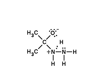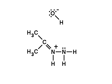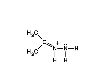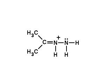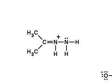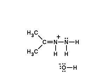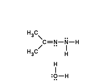An ammonium proton is transferred to the negatively charged oxygen atom, and upon heating, the tetrahedral structure collapses. Hydroxide ion leaves, and a carbon-nitrogen double bond forms. Hydroxide ion then removes the remaining proton on the positively charged nitrogen atom, giving a hydrazone.